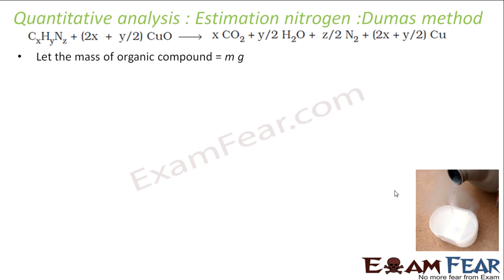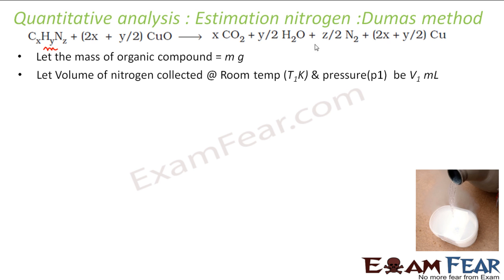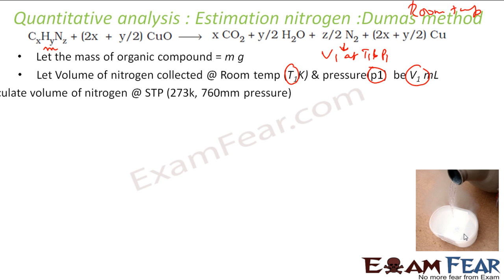So let us understand the reaction. Let us assume the mass of organic compound is m gram. And let the volume of nitrogen collected at room temperature, please note that everything is happening at room temperature. So let us assume that the volume of nitrogen collected at room temperature where T1 is my room temperature and pressure is P1. Let this be V1. So this is my nitrogen where I have V1 is the nitrogen volume at T1 temperature and P1 pressure. So first I have to calculate the volume of nitrogen at STP. So you have seen all the reactions we do. What we do is we generally convert all the volumes to STP.